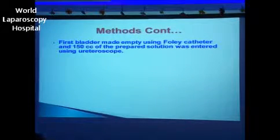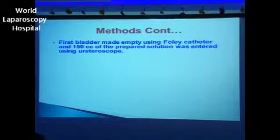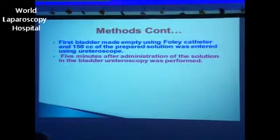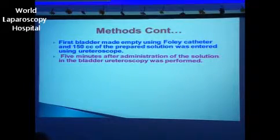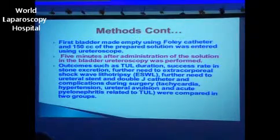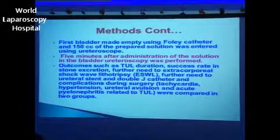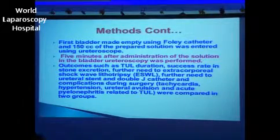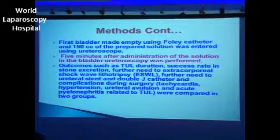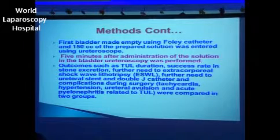First the bladder was emptied using a Foley catheter and 150cc of the prepared solution was administered using urethroscope. Five minutes after administration of the solution in the bladder, urethroscopy was performed. Outcomes measured included TUL duration, success rate of stone excretion, further need for extracorporeal shock wave lithotripsy (ESWL), further need for ureteral stent and double J catheter, and complications during surgery such as tachycardia, hypertension related to aminophylline effect, ureteral avulsion, and acute pyelonephritis related to TUL — all compared between the two groups.